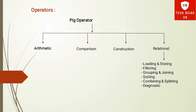Our next topic is operators in Pig. An operator is a symbol used to perform mathematical or logical functions. For example, in the expression A + B, plus is the operator and A and B are the operands — every expression is a combination of operator and operand. Pig has four types of operators: arithmetic, comparison, construction, and relational. The relational operator is further classified into six types: loading and storing, filtering, grouping and joining, sorting, combining and splitting, and diagnostics.